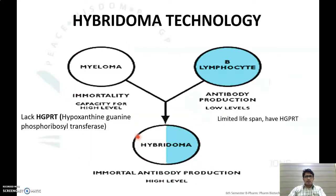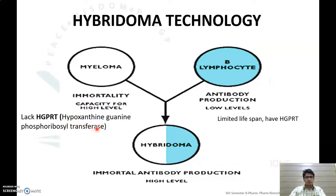Antibodies are produced by B lymphocyte cells, but B lymphocytes have some disadvantages — they have a limited lifespan. Myeloma cells have immortal capacity but cannot produce antibodies, and they must lack the HGPRT enzyme (hypoxanthine guanine phosphoribosyltransferase). By combining these two properties, we can produce a hybridoma cell that produces antibodies with immortal capacity.